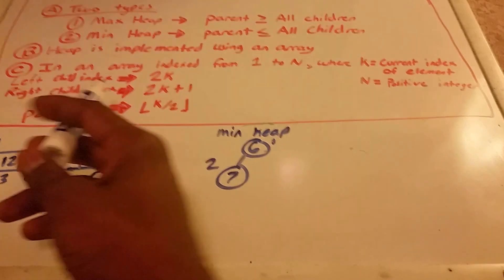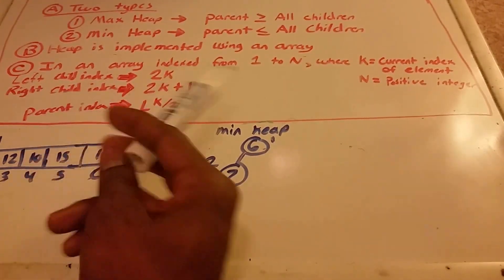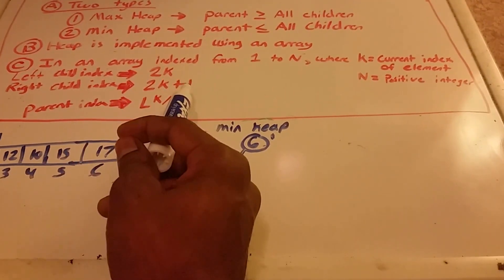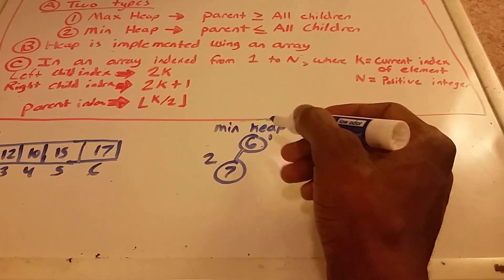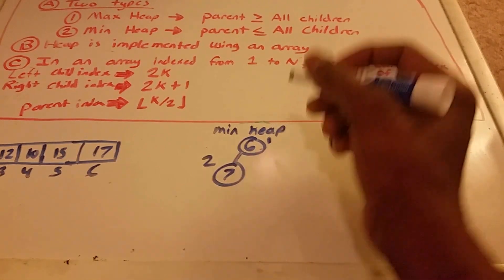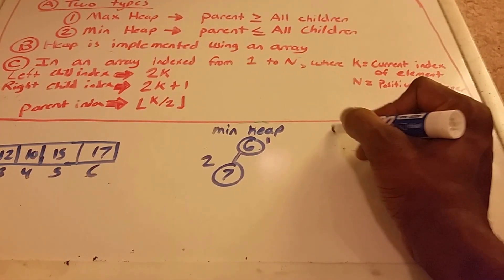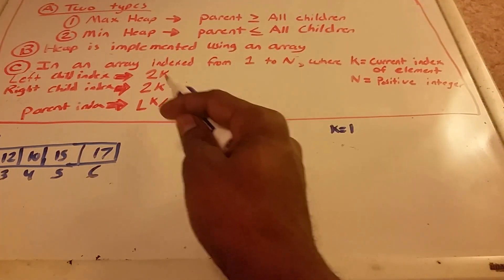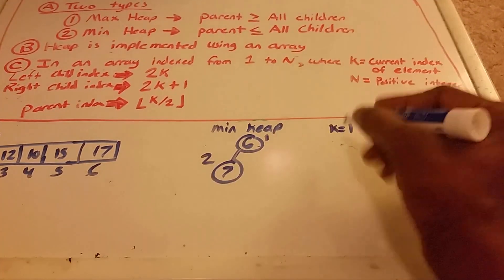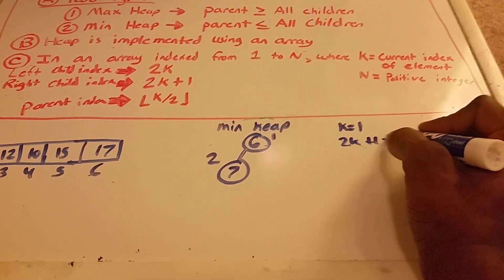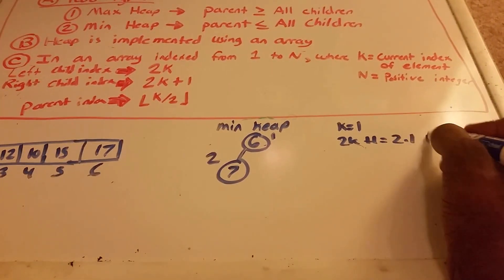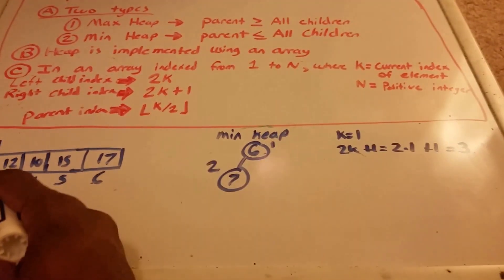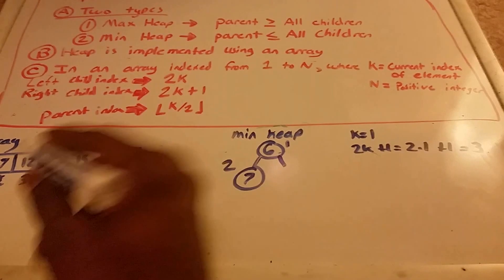Now we move on and want to insert to the right of our current node. The right child index is 2k plus 1. Our k value is 1, so I'm going to write our k values here so we don't get confused. 2k plus 1 equals 2 times 1 plus 1, which equals 3. So we go to index 3 and get that value.